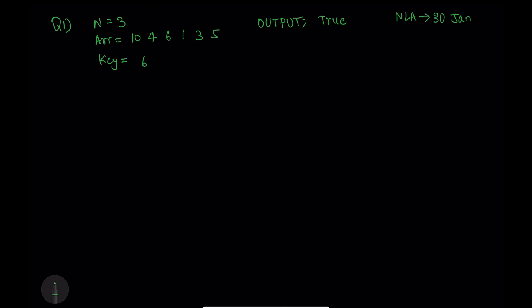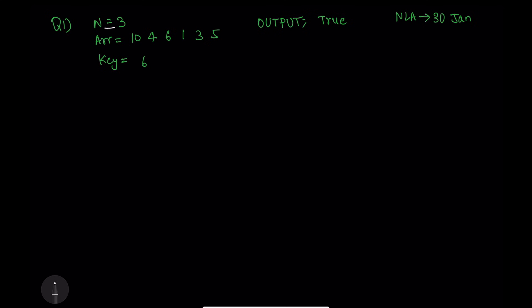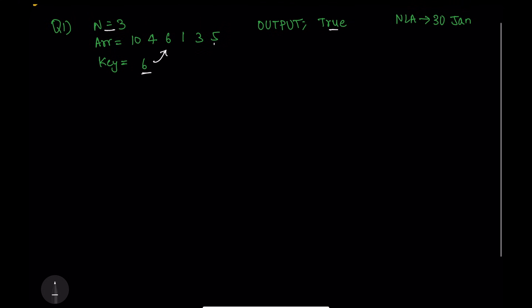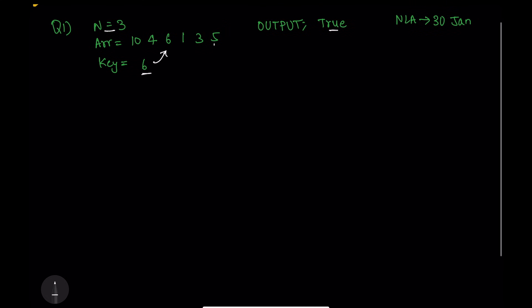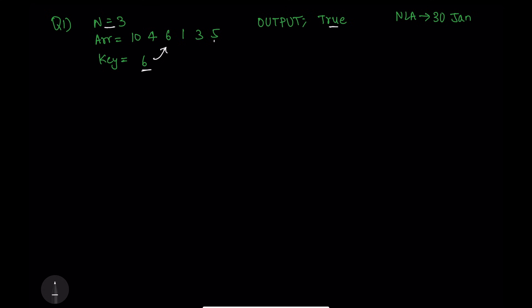The very first question: n is equivalent to 3 and we have an array — 10, 4, 6, 1, 3, 5 — and the output is 2 because the key is present inside that array. If you are able to figure it out, pause the screen and try to write the code. For those who are not able to solve it, let's have a try.